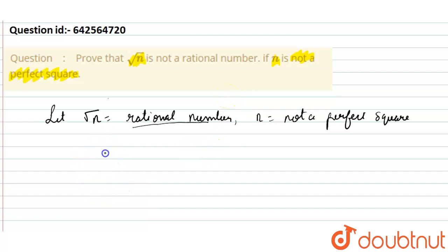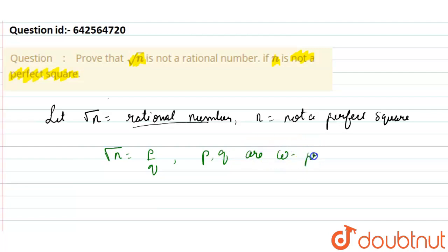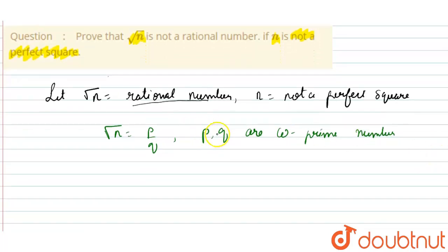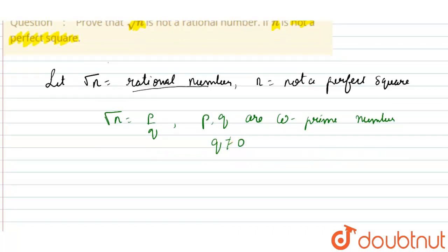I will suppose that √n = p/q, where p and q are co-prime numbers, and q is not equal to zero.